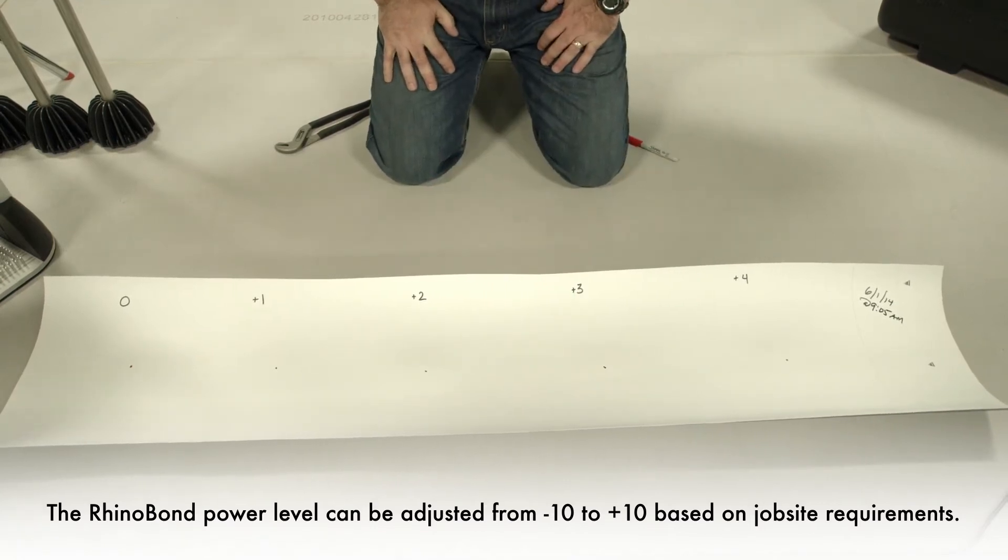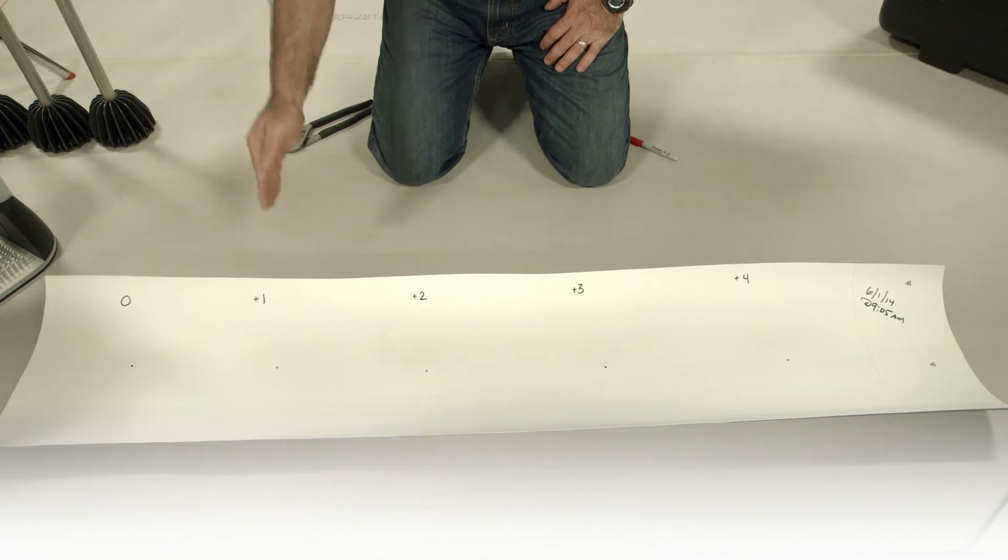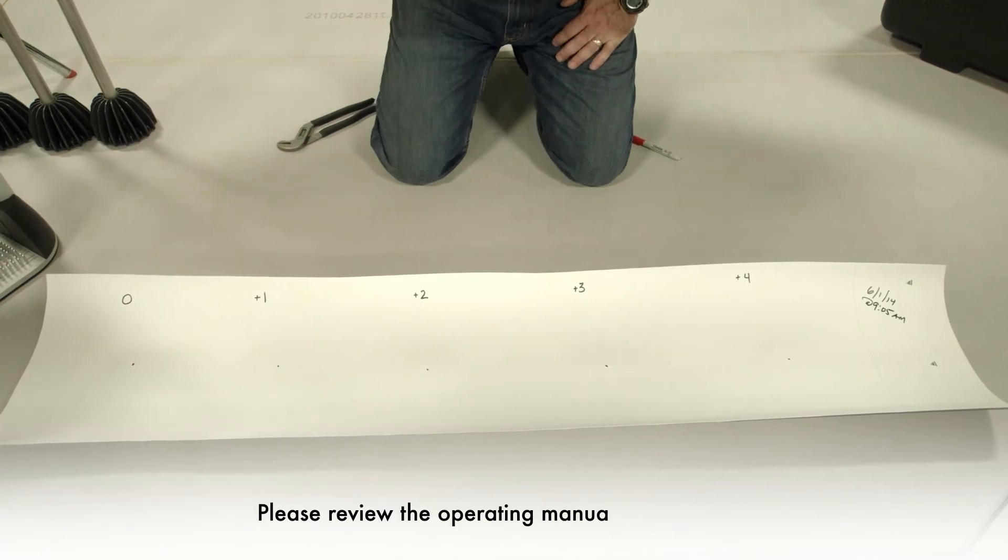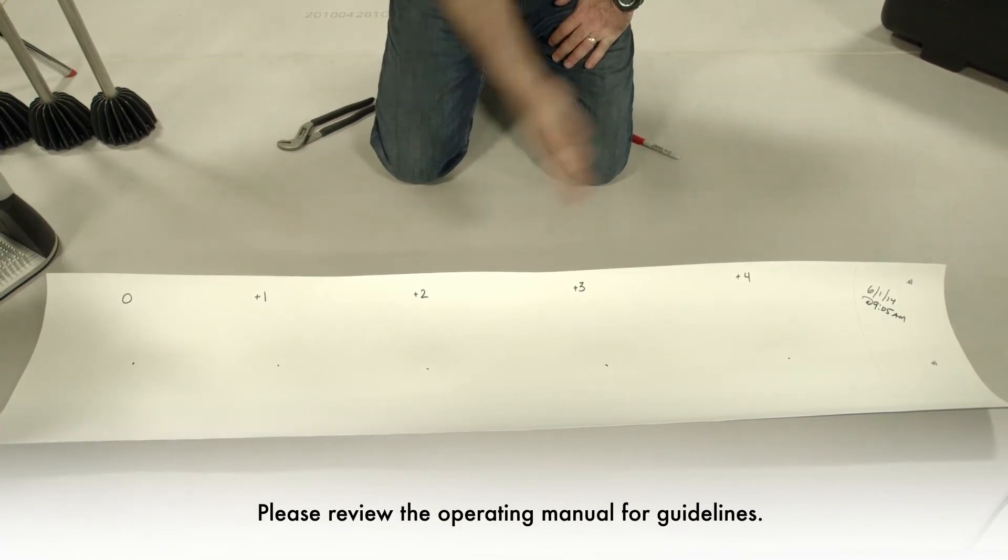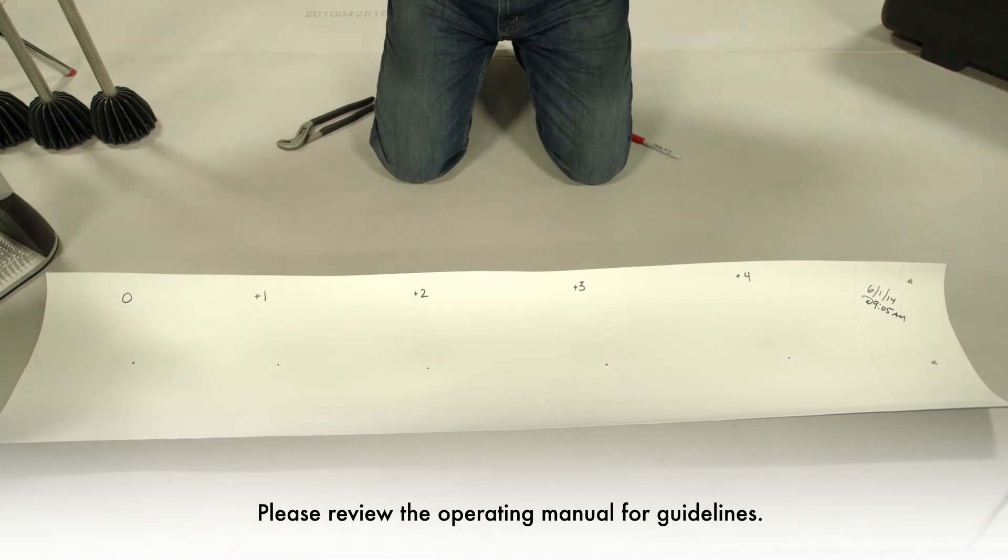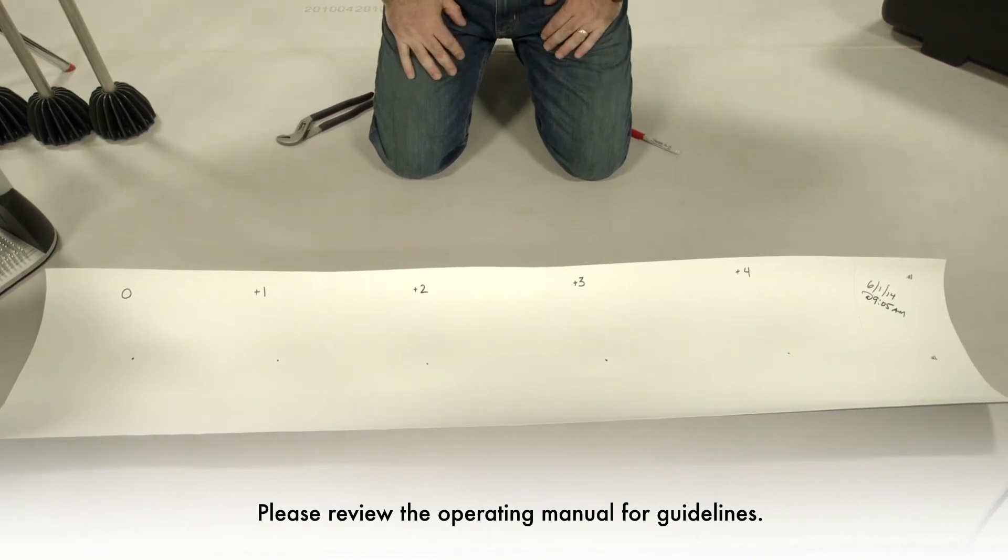Now it's time to perform a successive weld at a 0, a plus 1, a plus 2, a plus 3, and a plus 4. Once we've allowed each of those assemblies to cool, we'll take the magnets off, pull the plates, and do a good visual inspection.